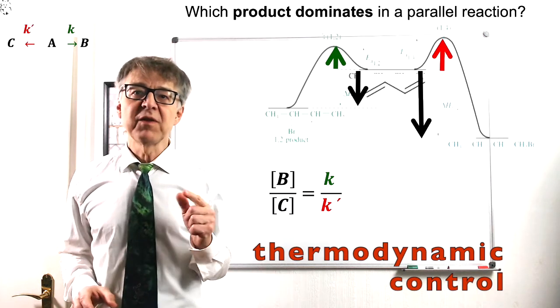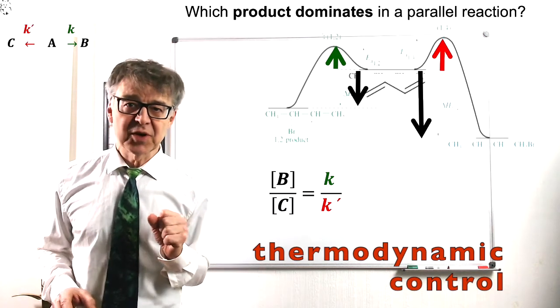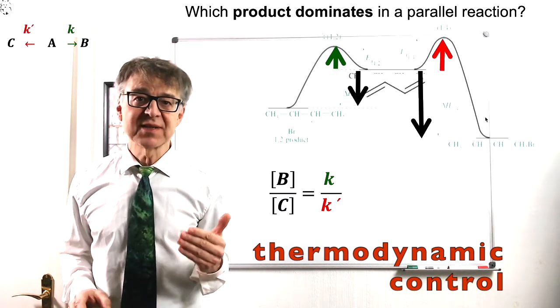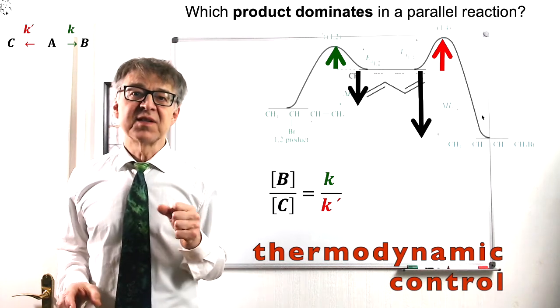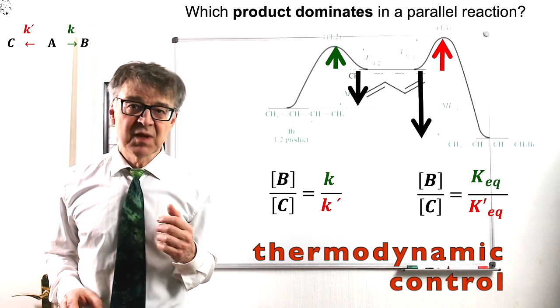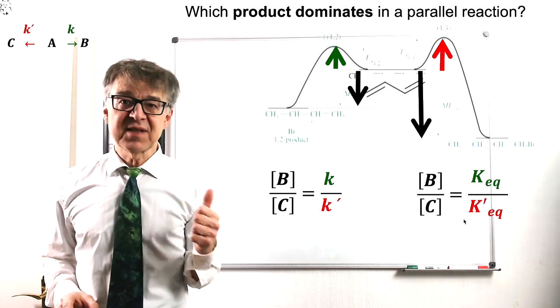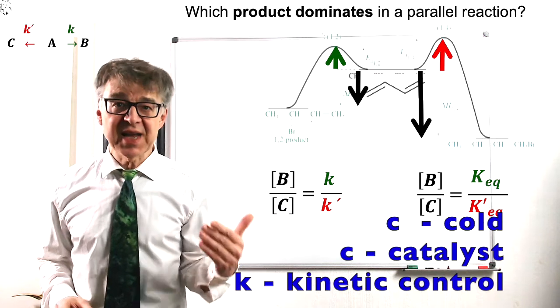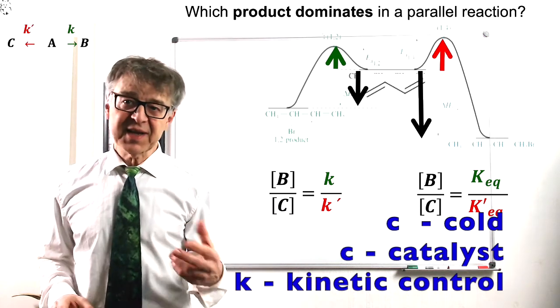In our example, the 1-4 product is the thermodynamic product. It is lower in energy and more stable. It is the main product at high temperatures and with long reaction times. The mnemonic here is CCK: cold temperatures and catalysts will lead to the kinetic product.